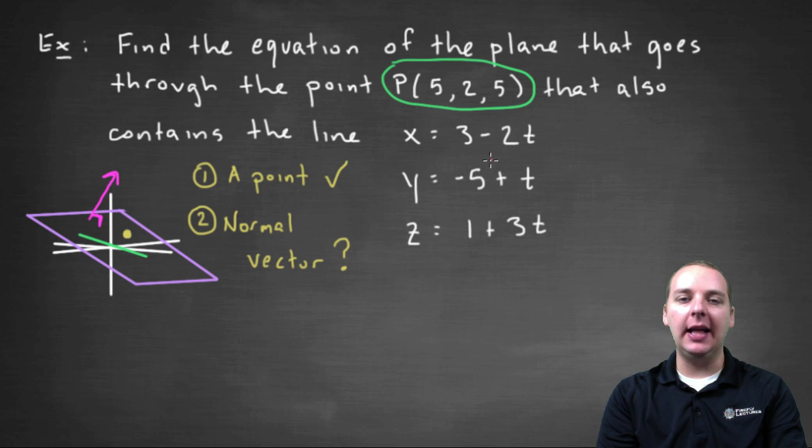Now when you look at this line, there is a vector that's related to this line. You remember when we were discussing a line in space, there was a vector that came into the question, the vector (a,b,c), which in our case is (-2,1,3). This was x_0 plus at, y_0 plus bt, and z_0 plus ct. The vector (a,b,c) was a direction vector for the line.